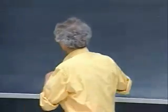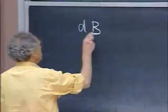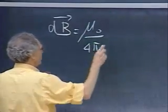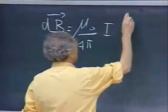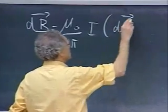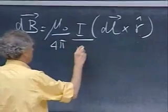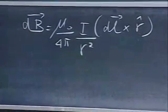Let's first start with Biot-Savart law. There are not too many problems one can do with it. dB equals mu-zero divided by four-pi, times the current, times dL cross R-hat divided by R squared. That's the formalism.